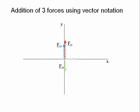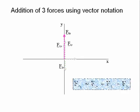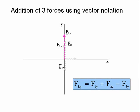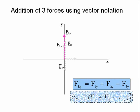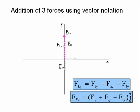Then, all the magnitudes of all the y components are added together to give the magnitude of the y component of the resultant force. The magnitude of FRy is equal to F1y plus F2y minus F3y. Or, the vector equation is FRy equals F1y plus F2y minus F3yj.